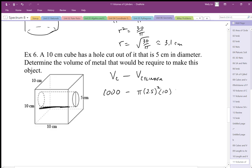This works out to be the volume of the object. So when I work this out, I'm going to end up with 1,000 minus, and this is going to be 62.5π.